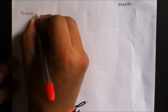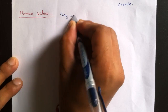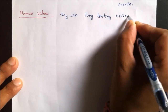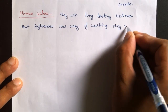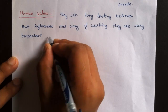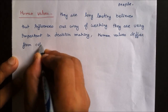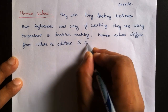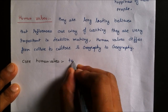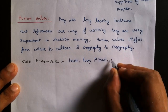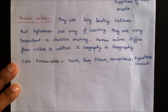The next topic is Human Values. Human values are long-lasting beliefs that influence our way of working. They are very important in decision making. Human values differ from culture to culture and geography to geography. There are five types of core human values: Truth, Love, Peace, Nonviolence, and Righteous Conduct.